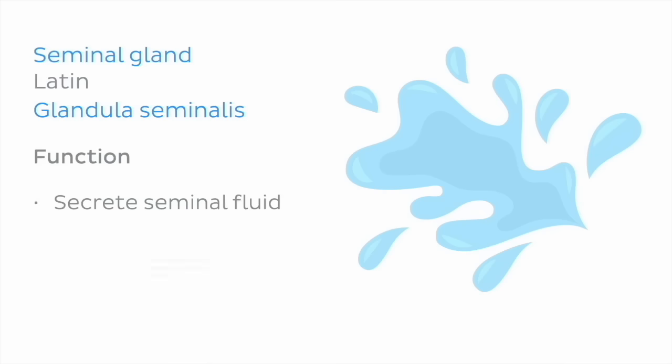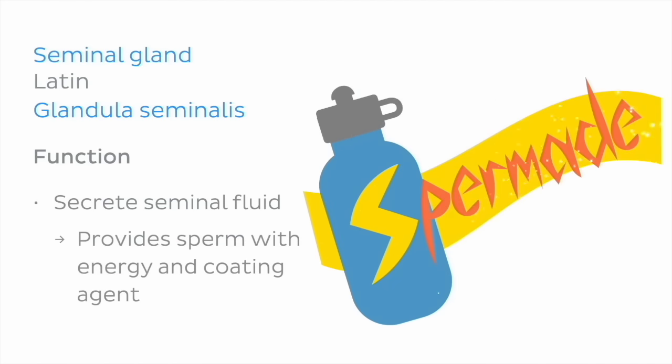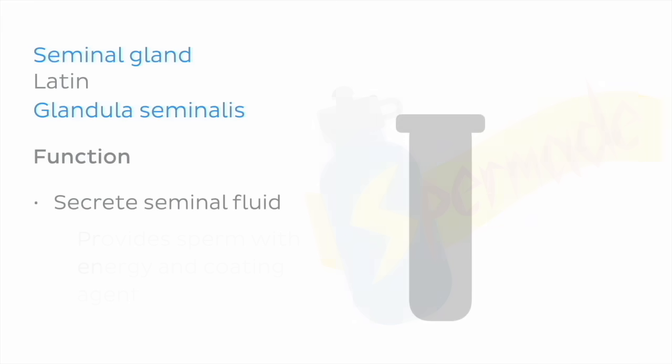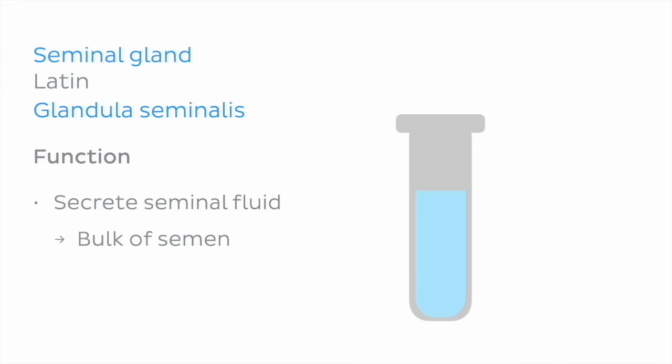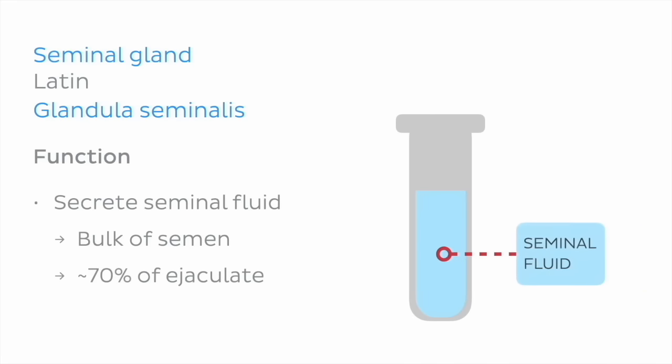This fluid provides sperm with an energy source and coating agent to neutralize the acidity of the vagina and cervical mucus. These secretions from the seminal vesicles comprise the bulk of the semen, making up around 70% of the volume of ejaculate.